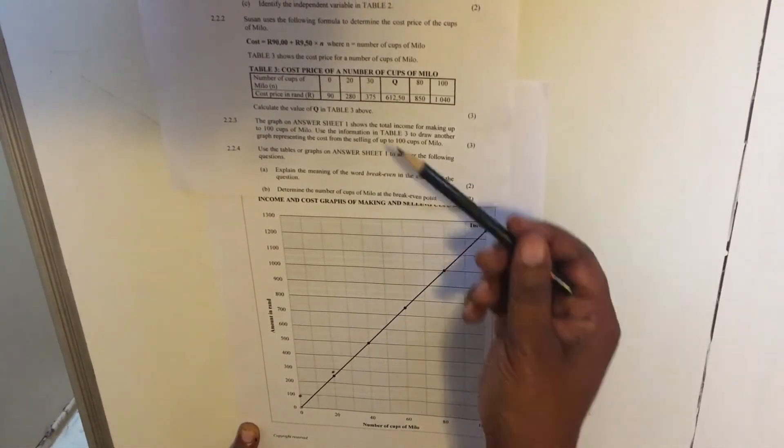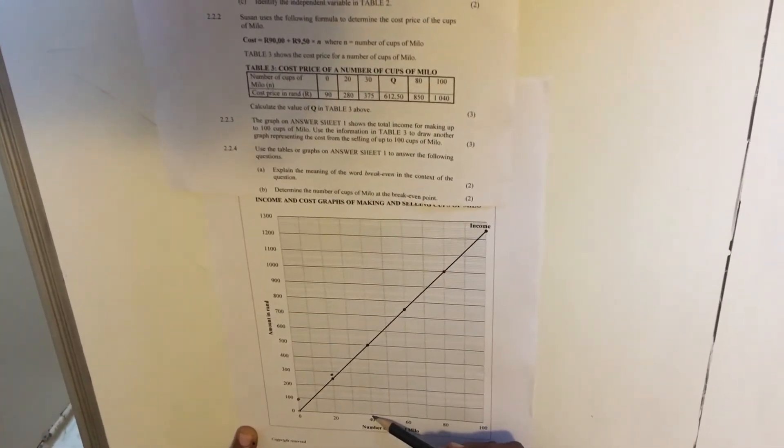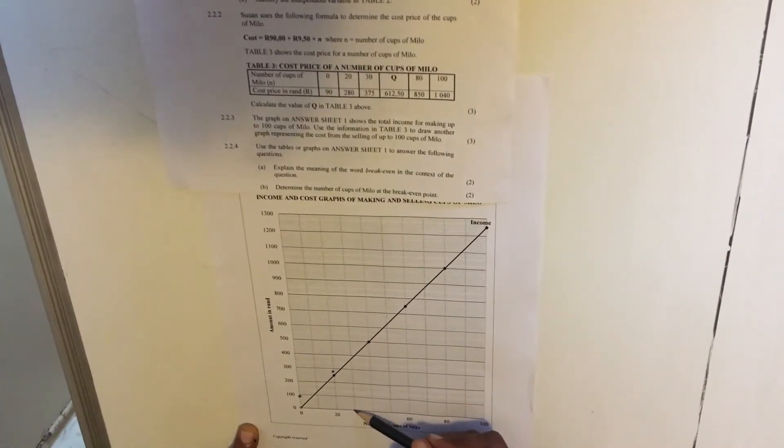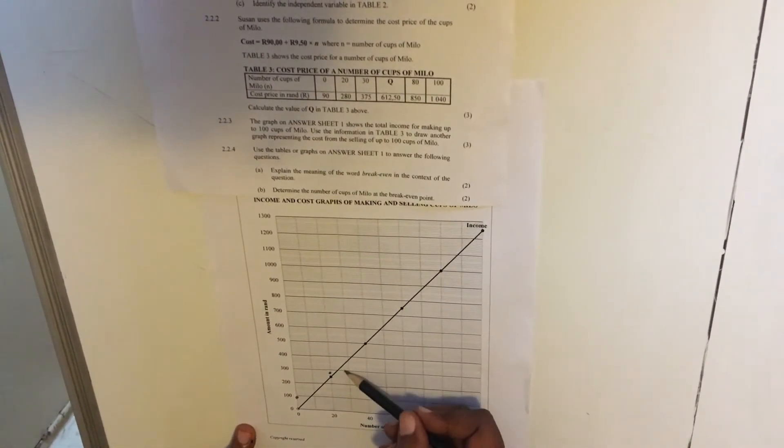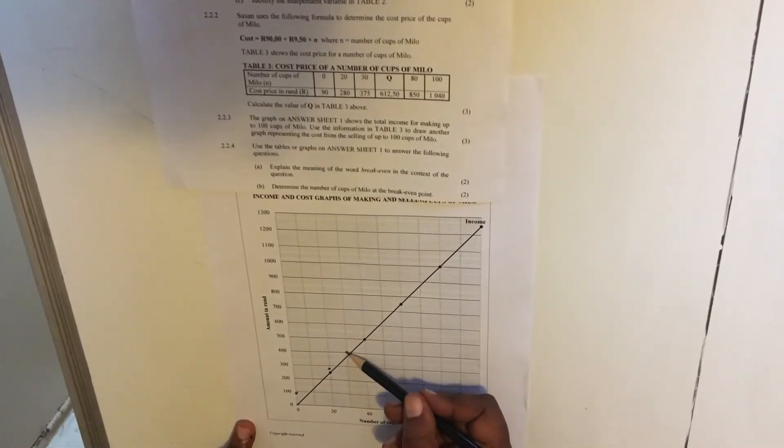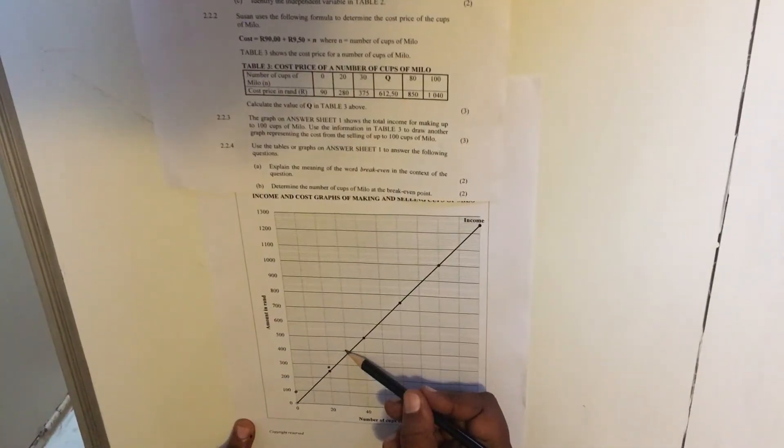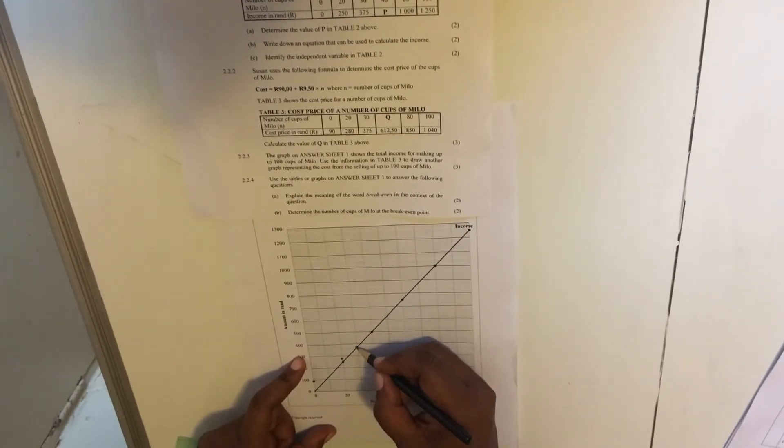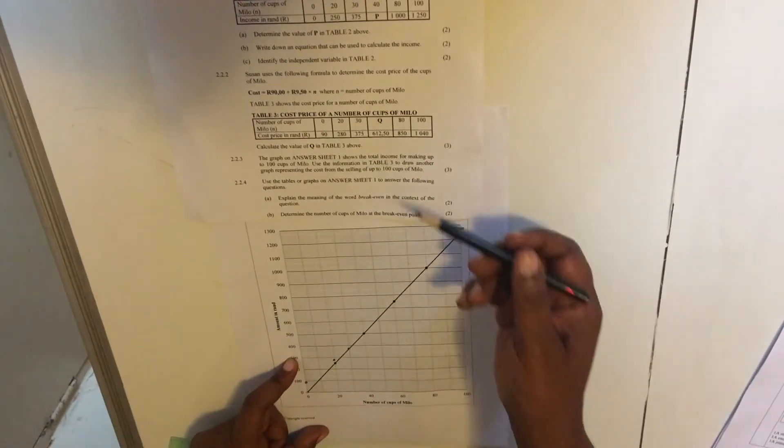And then the next one, 30 cups is R375. This is 40. This is 30. It's 200 and 300. This is 300. This is 400. So it will be R375. R375 somewhere here, right? They spaced them with 10, 10.